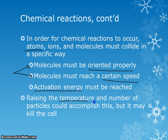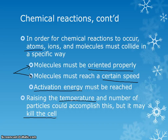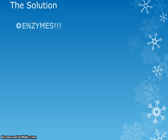You could raise the temperature to make the molecules hit each other more often, or you could stir the mixture, but you really can't do that inside of a cell. You can't raise your body temperature up to 150 degrees to make molecules hit each other more often. So there has to be another option to make chemical reactions happen fast enough to keep cells alive, and that option is enzymes.